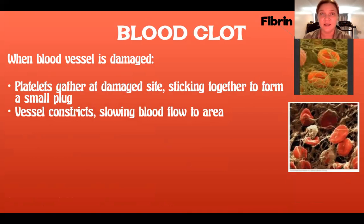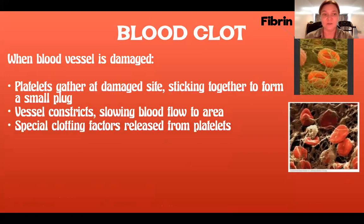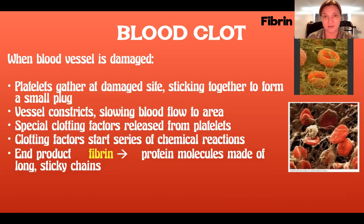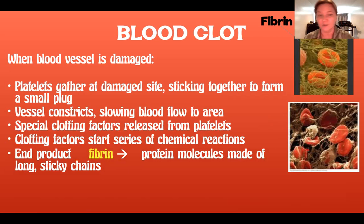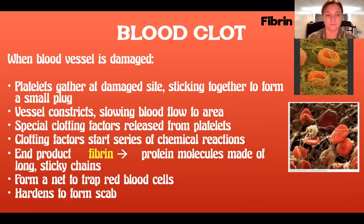The vessels constrict around the damaged area to slow blood flow so you don't bleed to death. The platelets release special clotting factors that trigger a series of chemical reactions. The end product of those reactions is a protein called fibrin — long, very sticky protein chains that form a net to trap red blood cells. Eventually, if this occurs on the outside of the body, the blood clot will harden to form a scab.